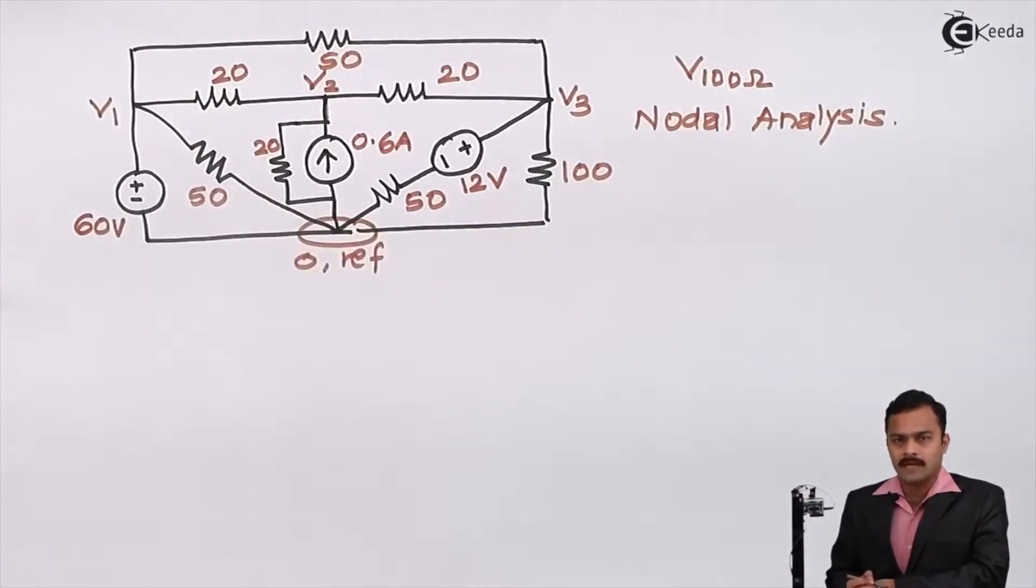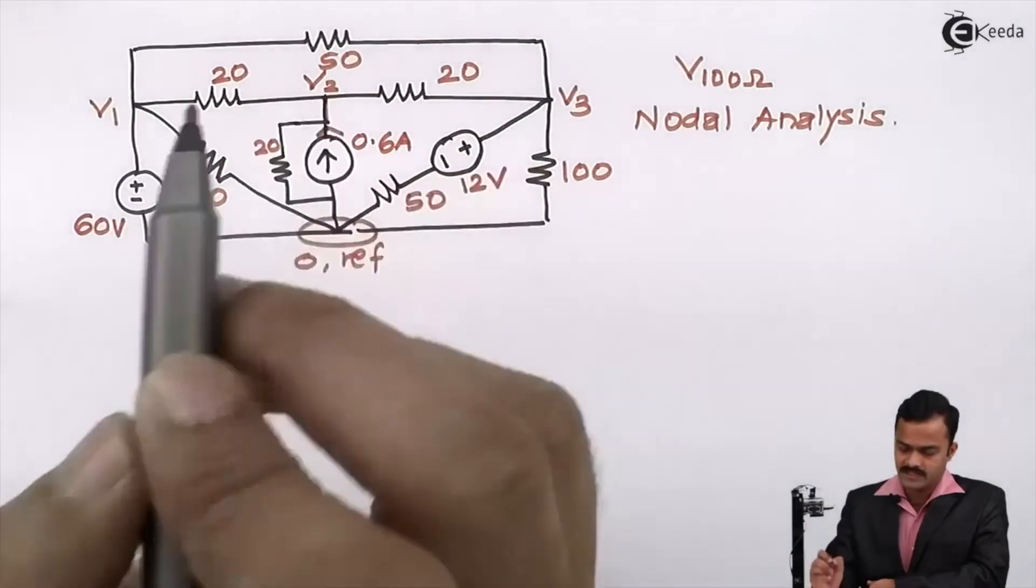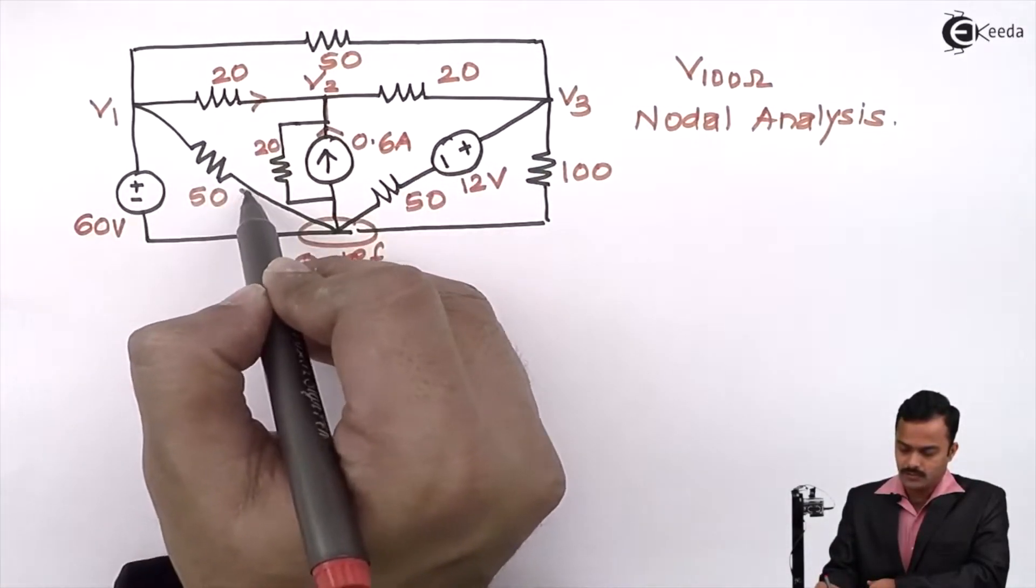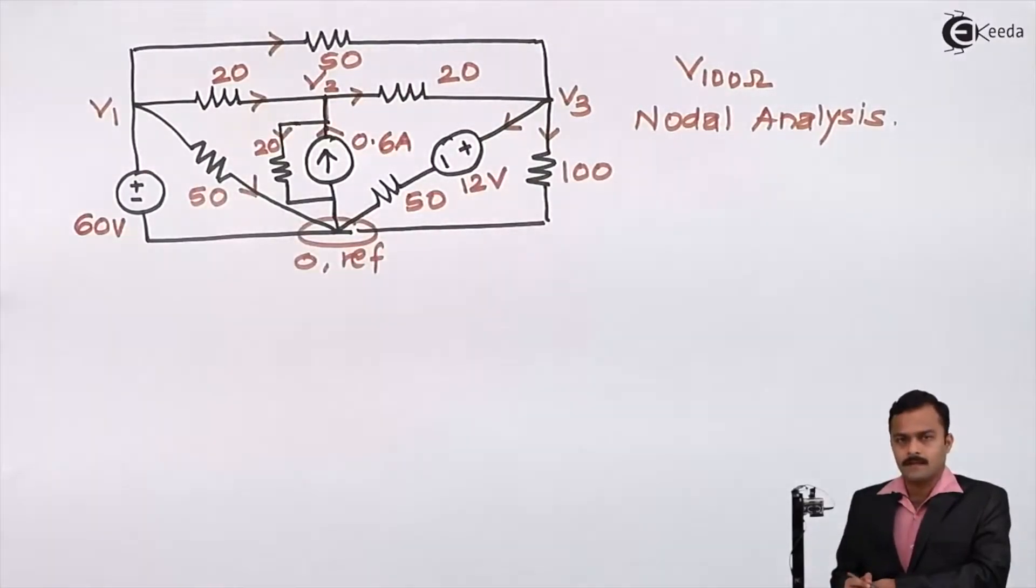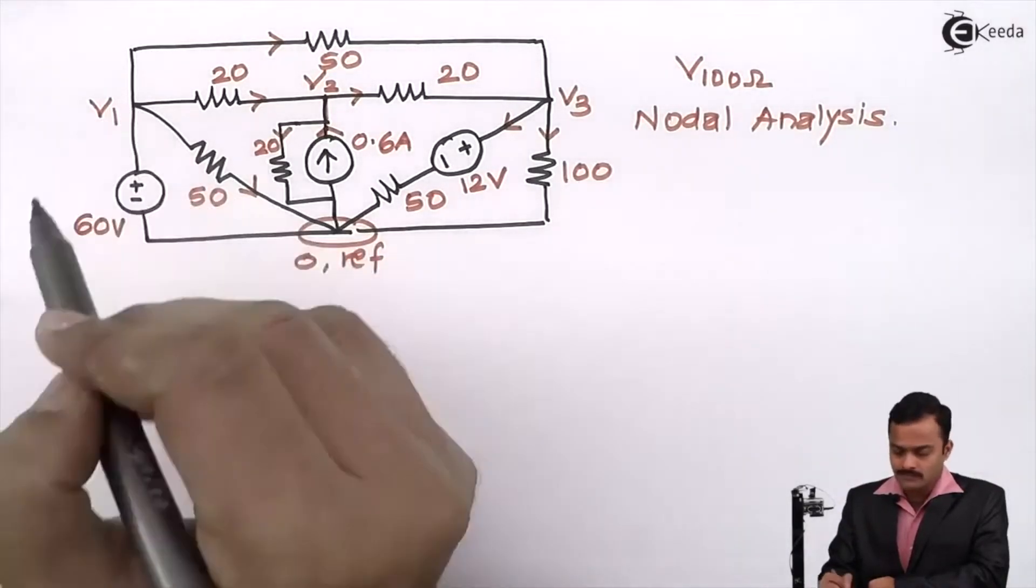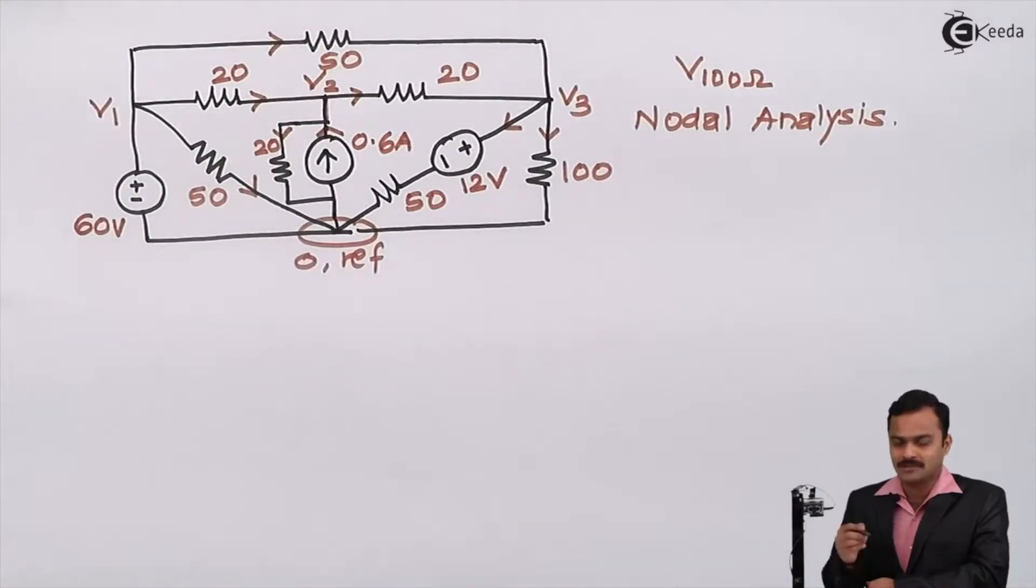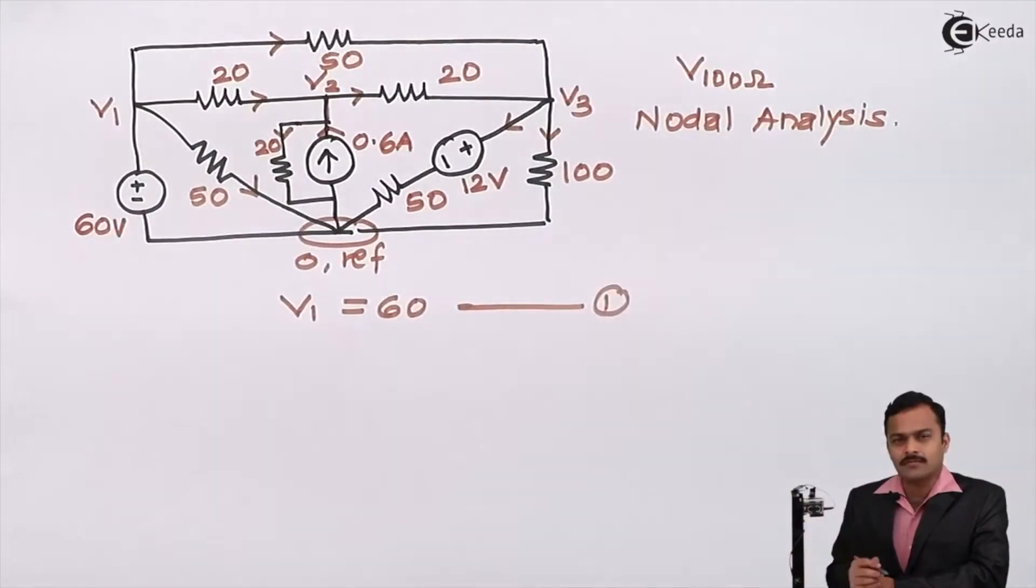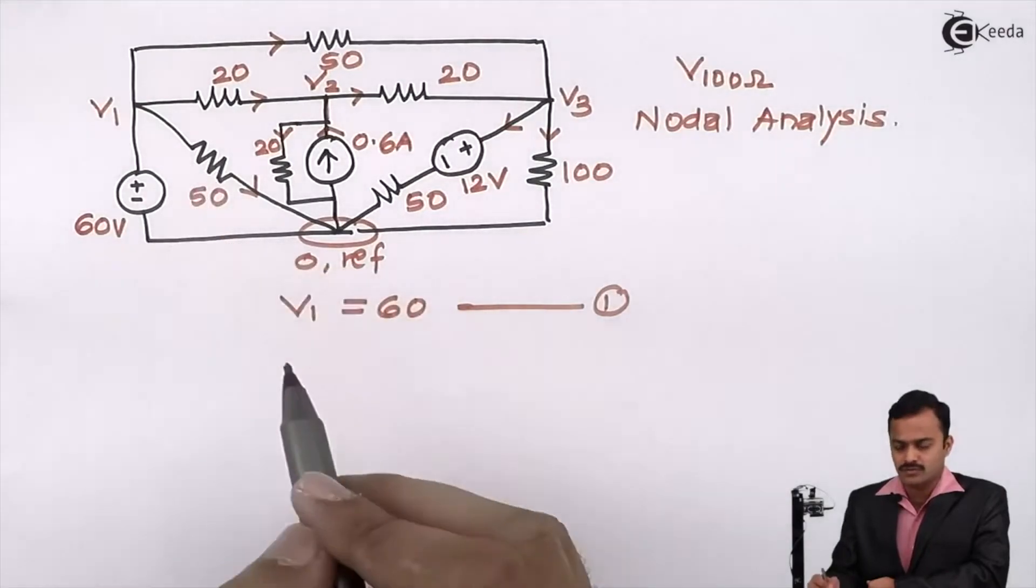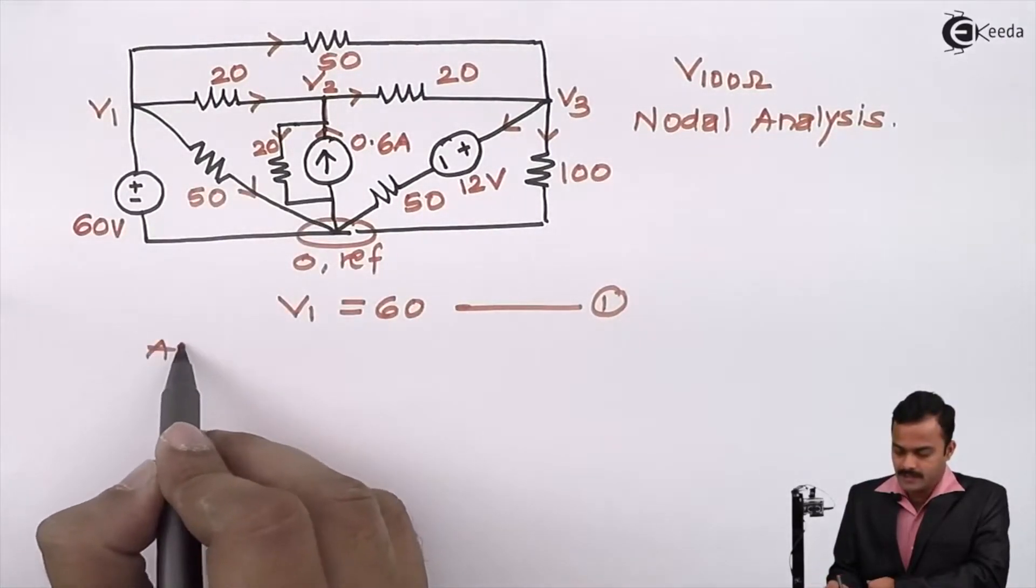Now let's mark all branch currents. Here current source is given, so I will keep the direction same as the current source for this branch, and for remaining I choose random directions. One more advantage in this problem: between node one and reference only voltage source is present, so our work has been reduced because one equation I will directly get, V1 equal to 60. So this is a strength of nodal analysis. V1 equal to 60 is equation number one. No need to apply KCL at node one. Let's apply KCL at node two.